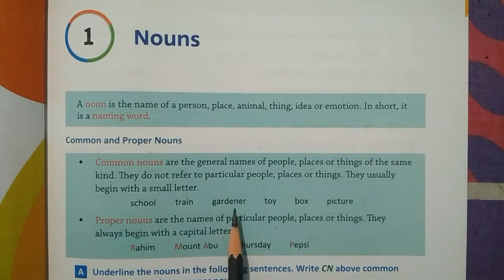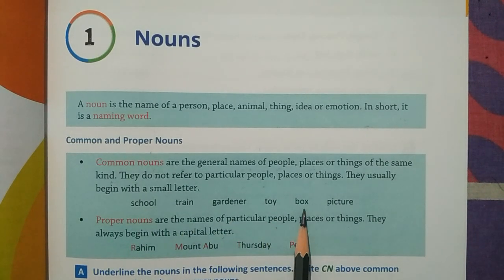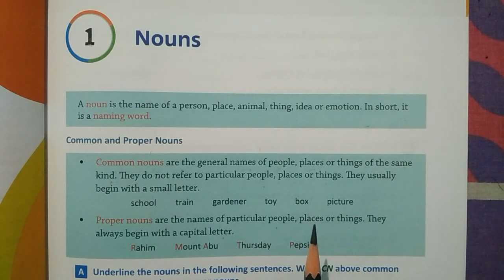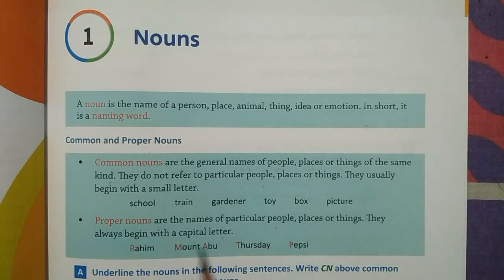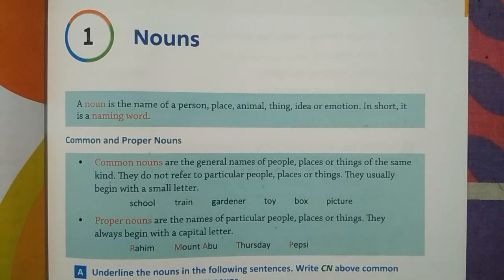Examples of common nouns: school, train, gardener, toy, box, picture. For example, the name 'girl' can be given to any and every girl. It does not point out any particular girl — it is common to all girls. It is therefore called a common noun.